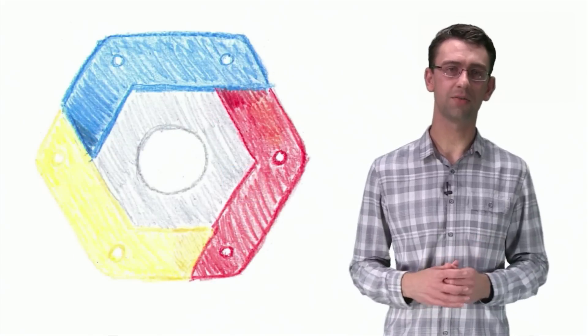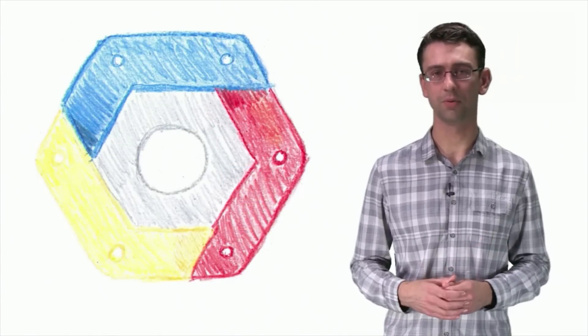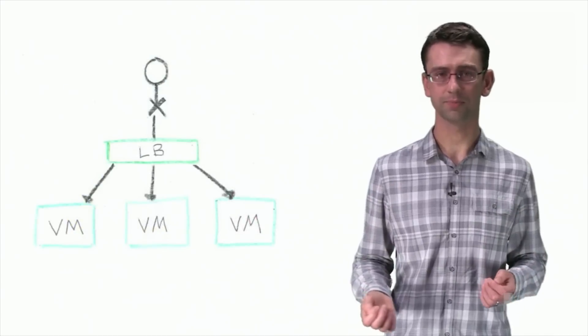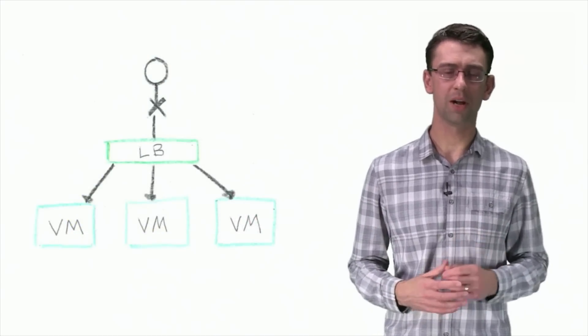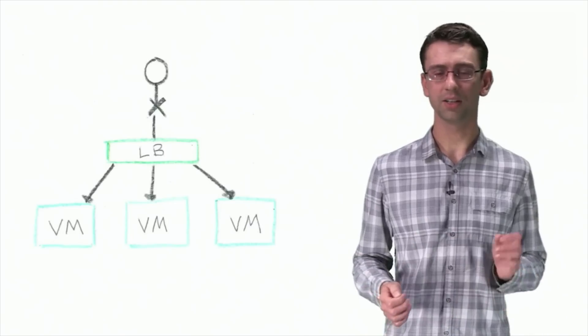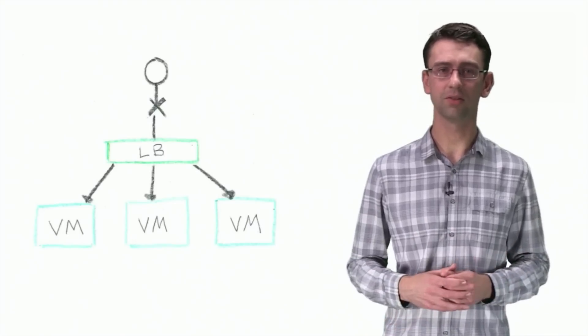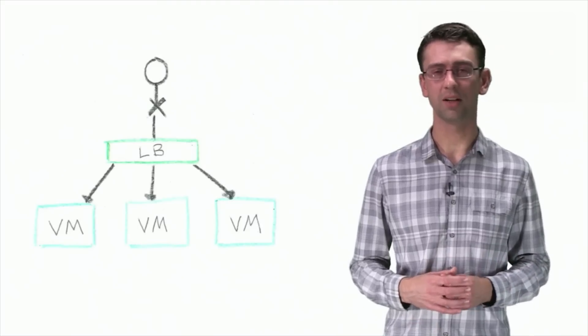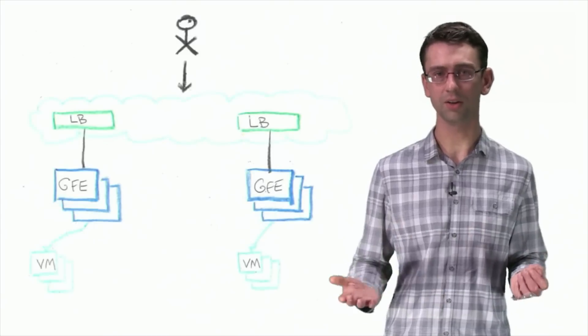You can now take advantage of this same infrastructure with Google Cloud Platform. We offer two types of load balancing, network and HTTP. Network load balancing, launched in 2013, spreads traffic over VMs within a region. It doesn't modify the packets, so VM instances can use the source IP address of the client if required. Network load balancing can be used with both TCP and UDP.